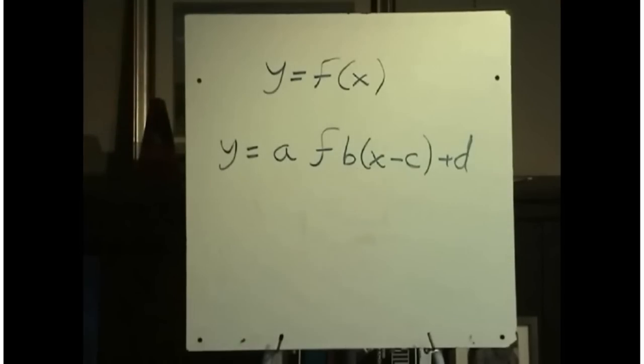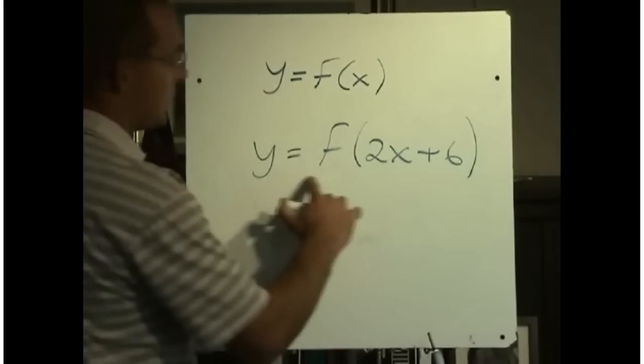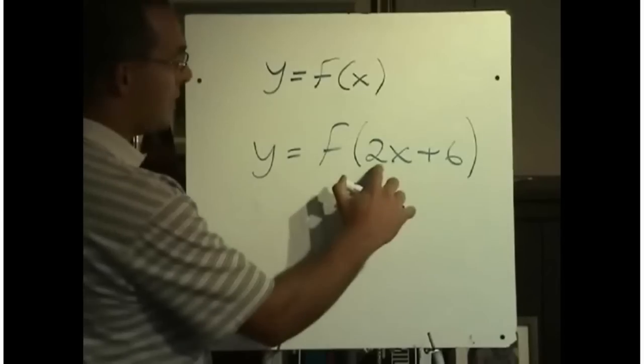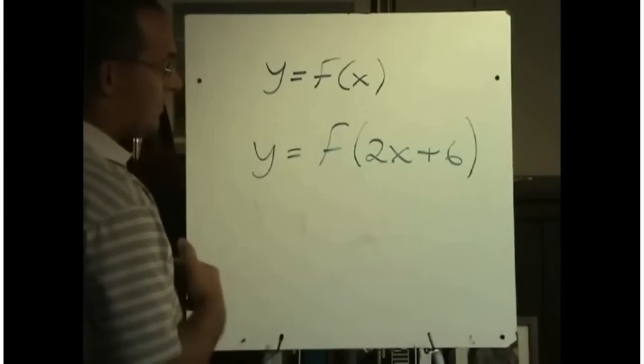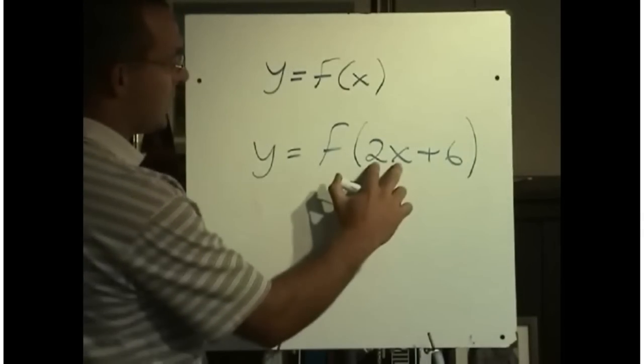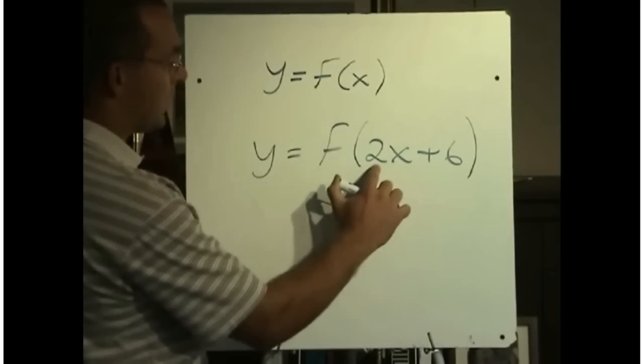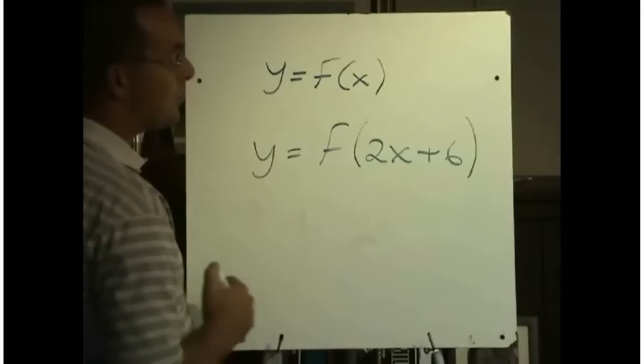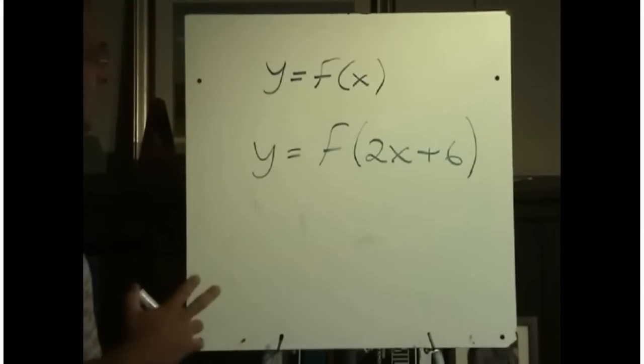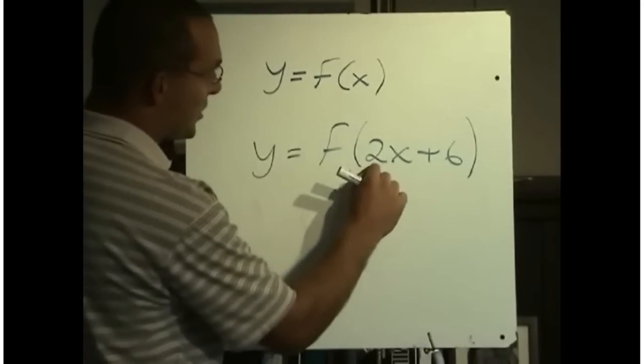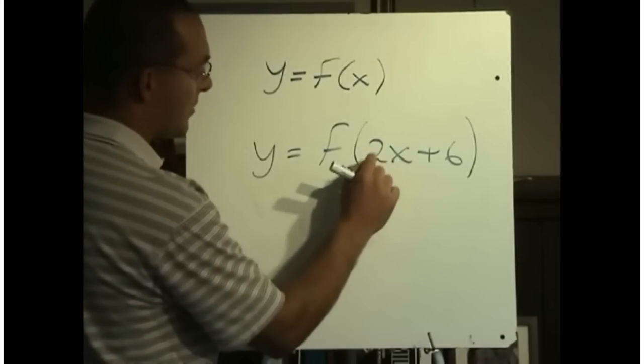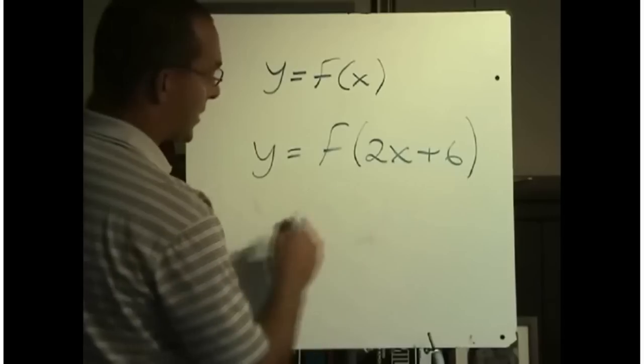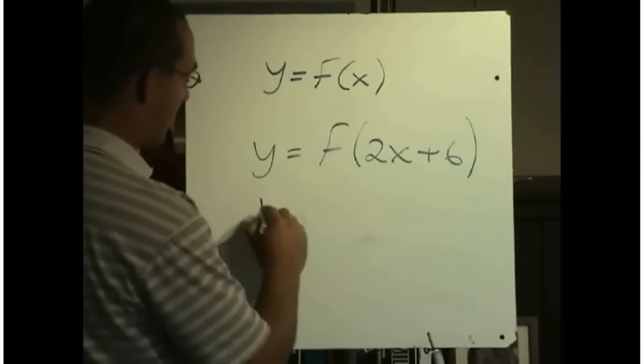Let me show you how this is really important here. Say we had this new function here, y equals f of bracket 2x plus 6. Now if you looked at this at first you might say, okay, x was replaced with 2x, so this is a horizontal compression by a factor of a half. And then we've got x plus 6, so this would be moved left 6. That's not correct.